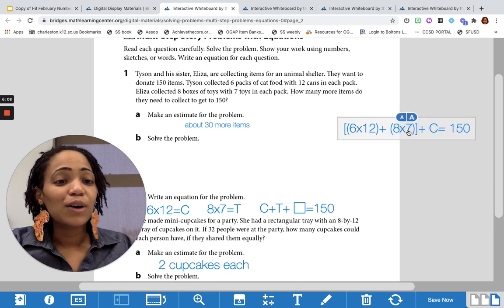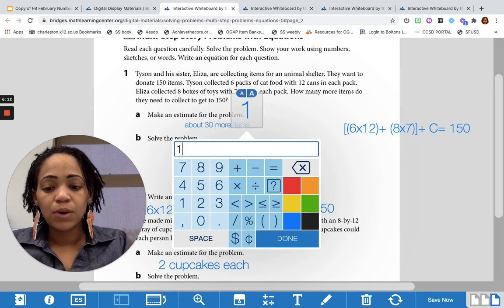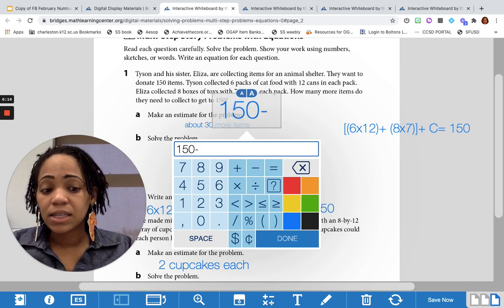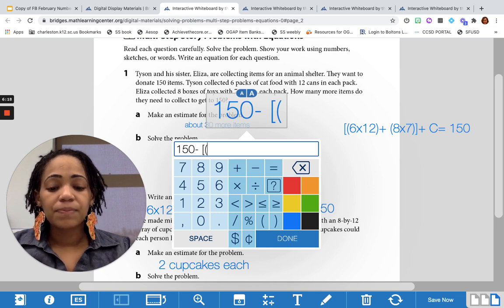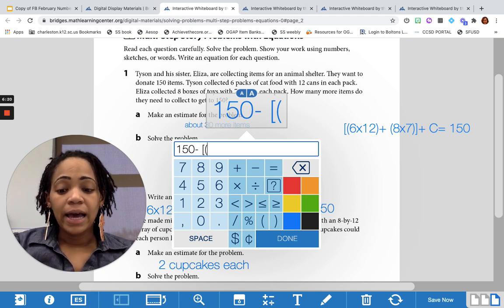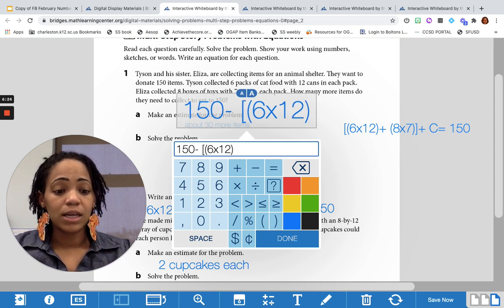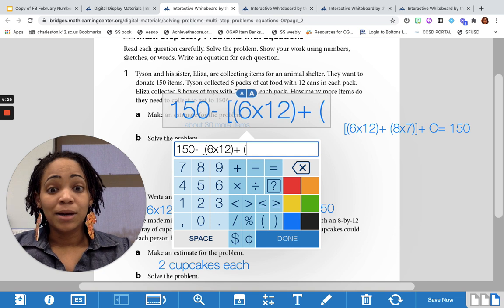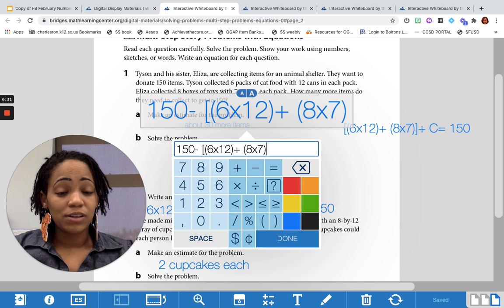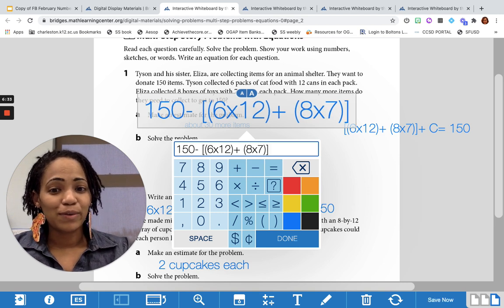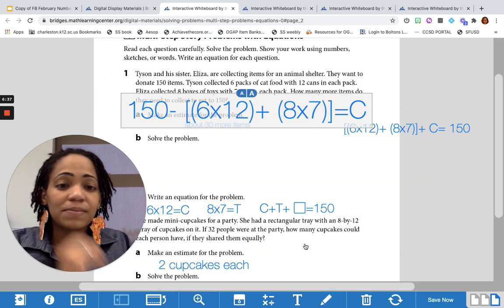So we got to do all of that first, and then whatever we're left with, we got to add it to how much more we need to collect, which is going to give us 150. That is one of the equations that we could have done. We could also have written this: 150 minus, and I'm still going to use my double brackets here because I need to make sure I'm adding the 6 times 12 and 8 times 7 together. You guys will be seeing some double parentheses and extra stuff going on, especially when you hit fifth grade.